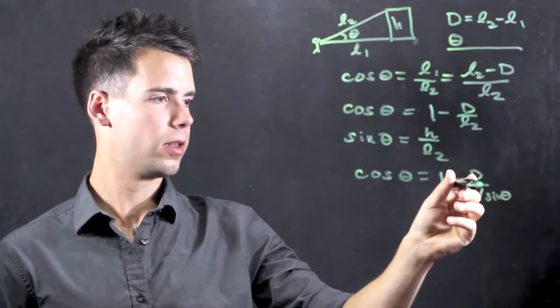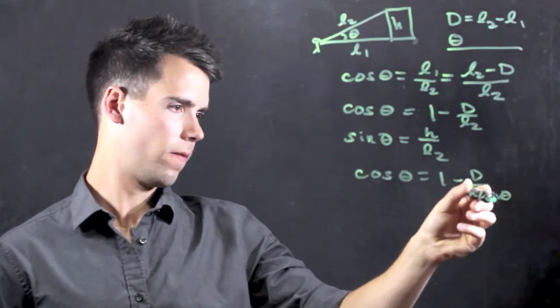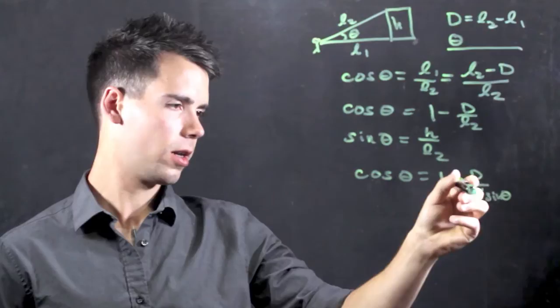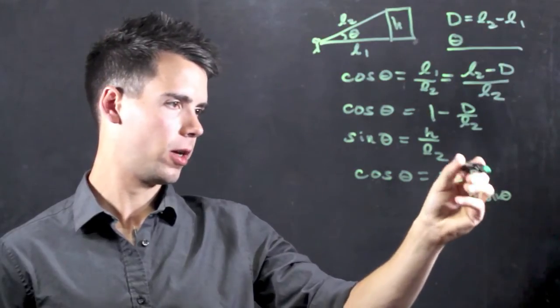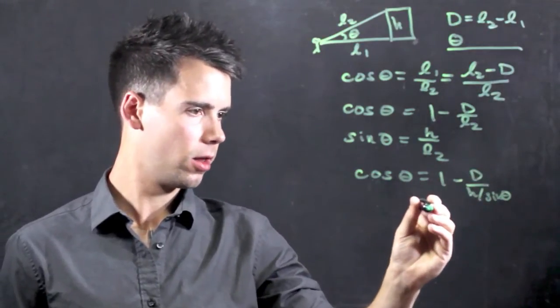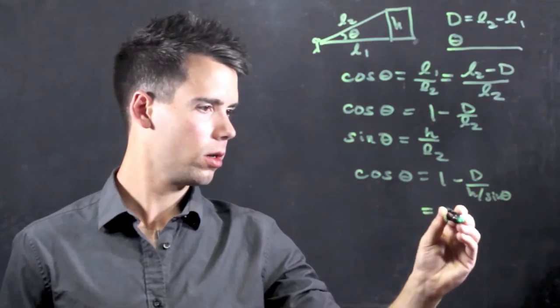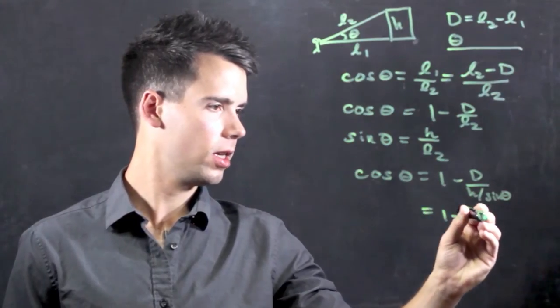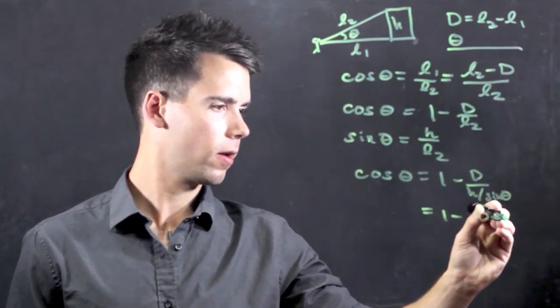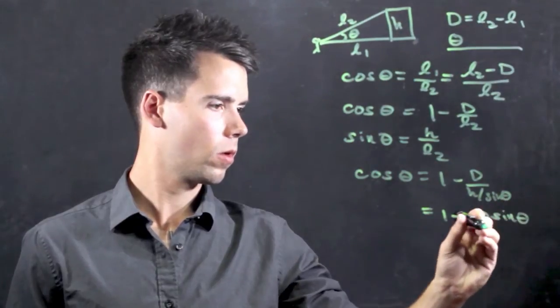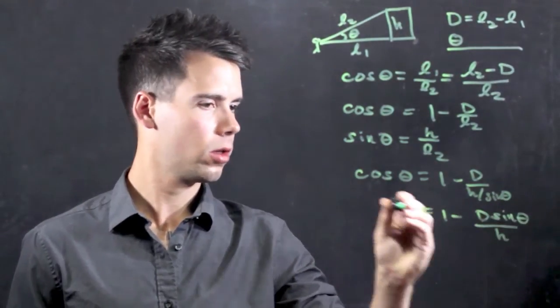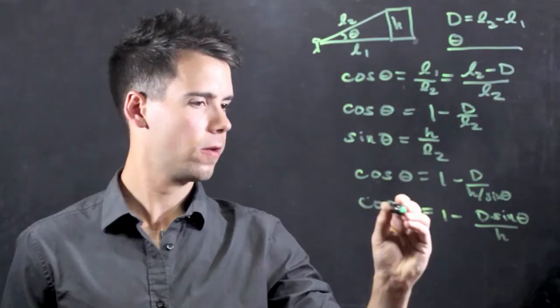And since sine theta is in the denominator of this portion, it's being divided, we can actually just multiply it by this term. So we find that it's equal to 1 minus d times sine theta over H, which is cosine theta.